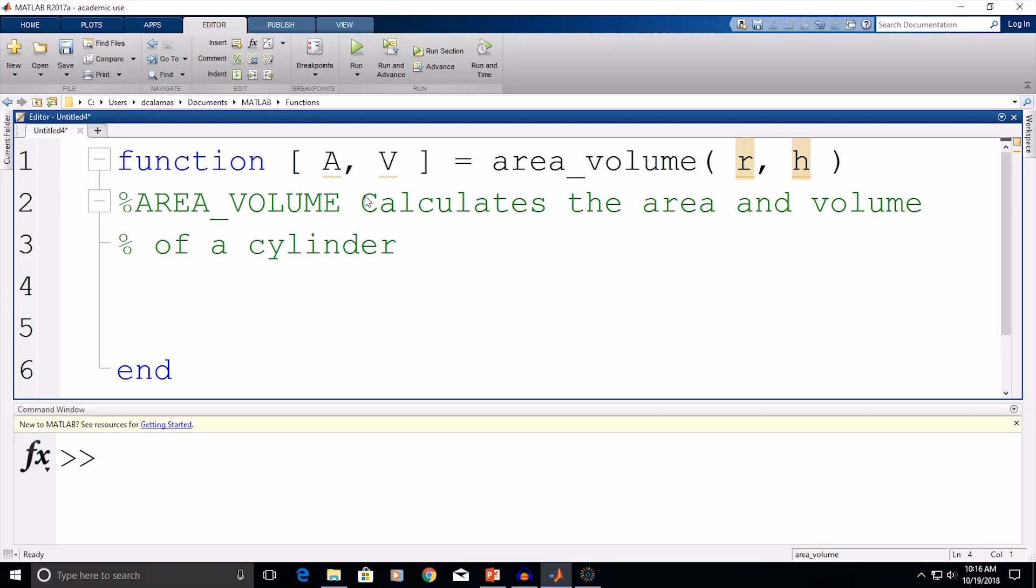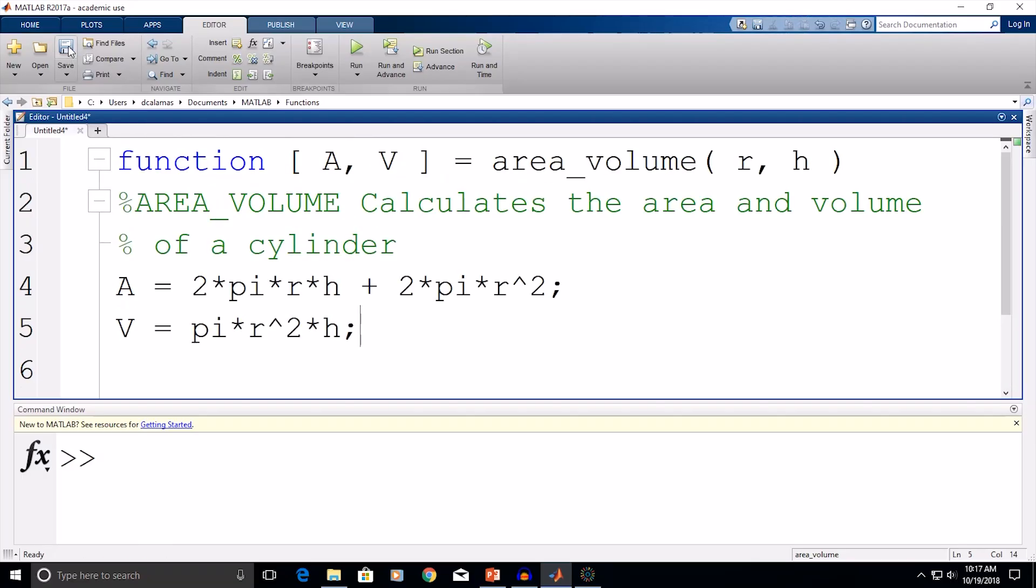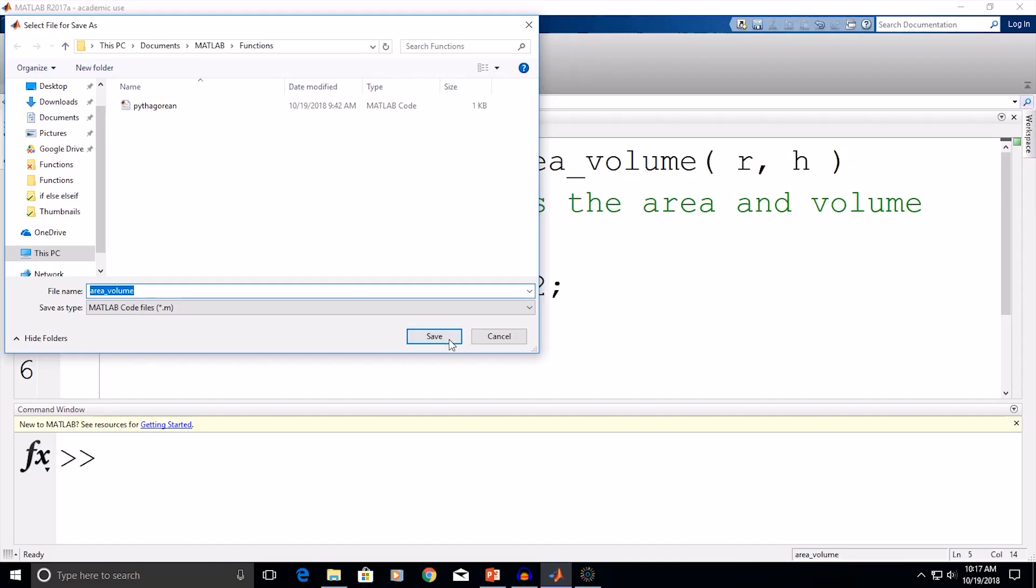So, next, we'll do our calculations. First, let's start with the area of the cylinder. So, our area is equal to 2 times pi times the radius times the height plus 2 times pi times the radius squared. And I'm going to add a semicolon to suppress this from outputting to the command window. So, next, I'm going to do the volume calculation, and the volume of a cylinder is pi times the radius squared times the height. And again, I'll add a semicolon here. And then our function ends with the end statement. So, now I'll click save, and the function name is already filled in. So, I'll click save again.